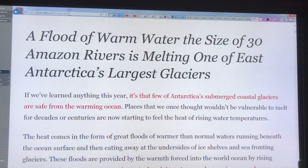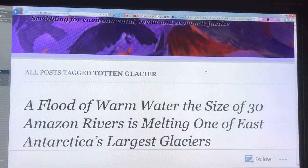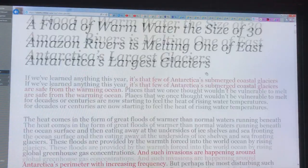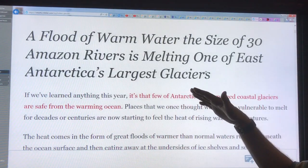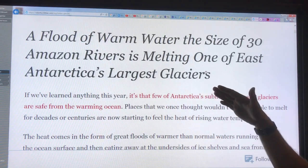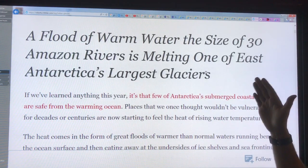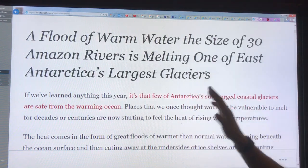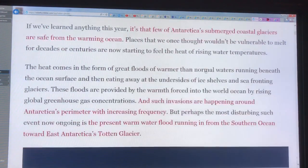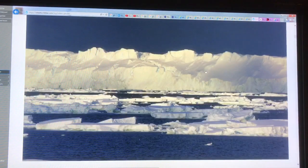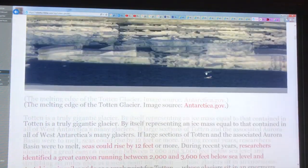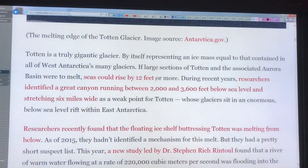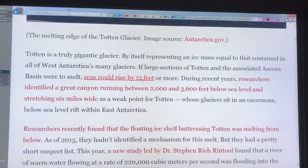Just a couple quick points here. This is a recent post from Robert Scribbler. This warm water that's going underneath Antarctica's largest glacier, one of its largest glaciers in East Antarctica—the Totten Glacier—is equivalent to 30 Amazon rivers. This is an image of the melting edge of the Totten Glacier.